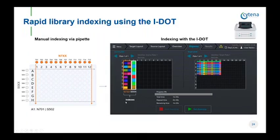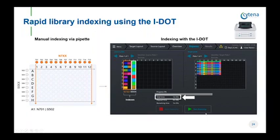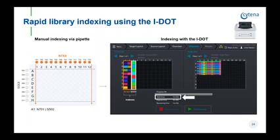On the left you see the source plate loaded with the 12 forward and 8 reverse primers from the Illumina kit, and on the right the 384-well plate with 96 cDNA libraries after tagmentation that will be indexed. A nice feature of the IDOT Assay Studio is that it allows you to run a simulation prior to starting the dispensing run. As shown here, the time needed to index 96 libraries is 1 minute and 5 seconds, dispensing a volume of 500 nanoliters per well. The whole process can be even faster if volumes of primers are further reduced.